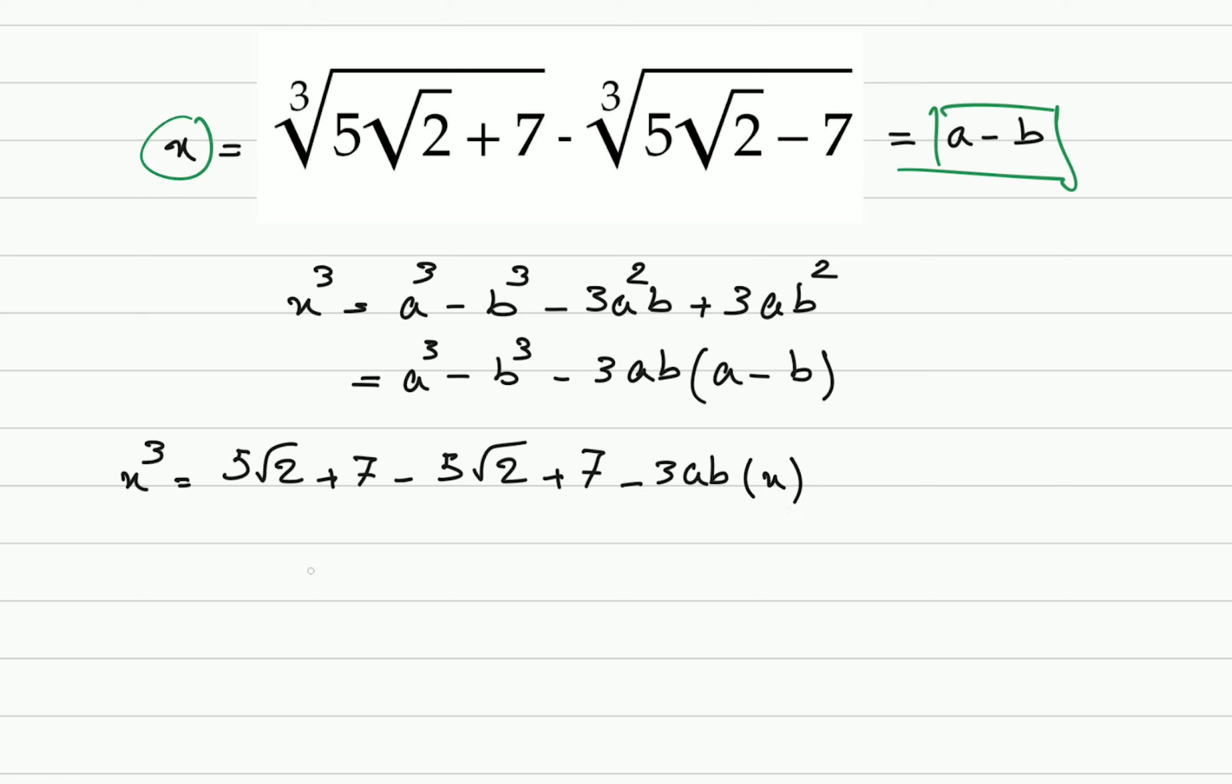Awesome. So, what's a times b? That's cubic root of 25 times 2 minus 7 to the power of 2, 49, and that's cubic root of 50 minus 49, that equals to 1. Great.